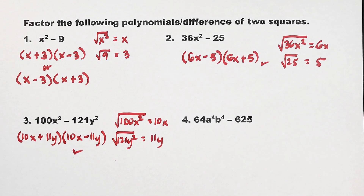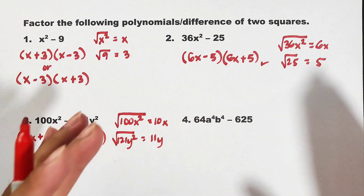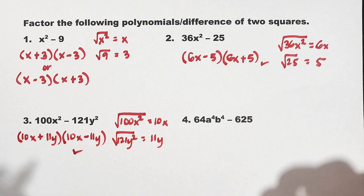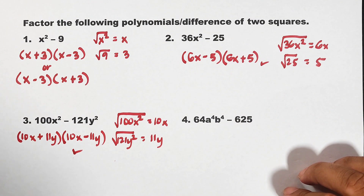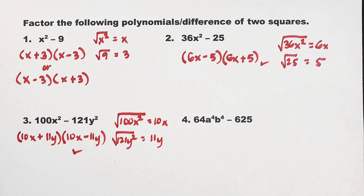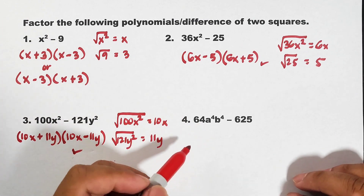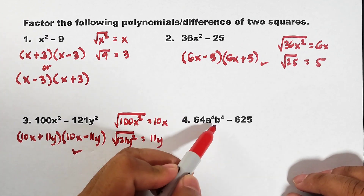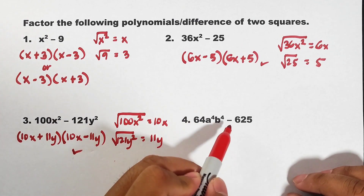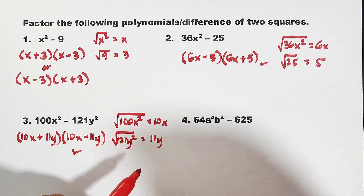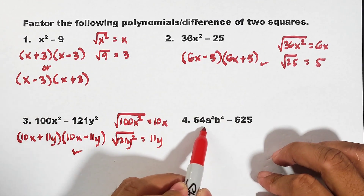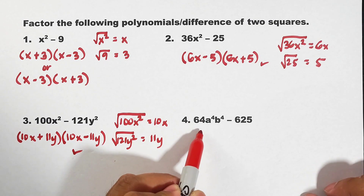We are done with the first, second, and third examples. Let's move on with the last one. For the last example it might be a bit confusing, but don't worry about it. We have 64a raised to the fourth power, b raised to the fourth power, minus 625. Here's the question: is this a perfect square? Yes.